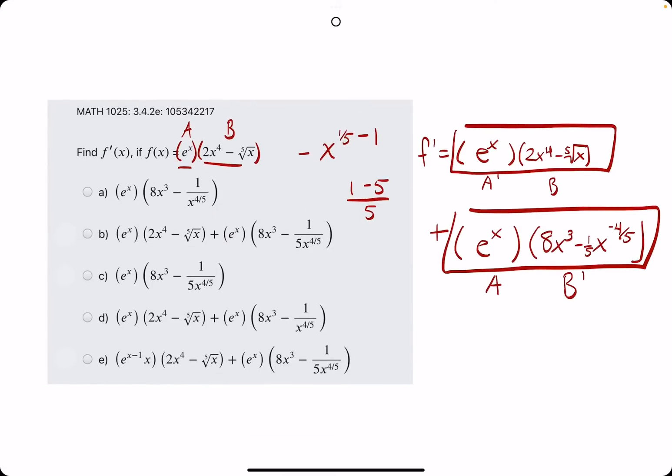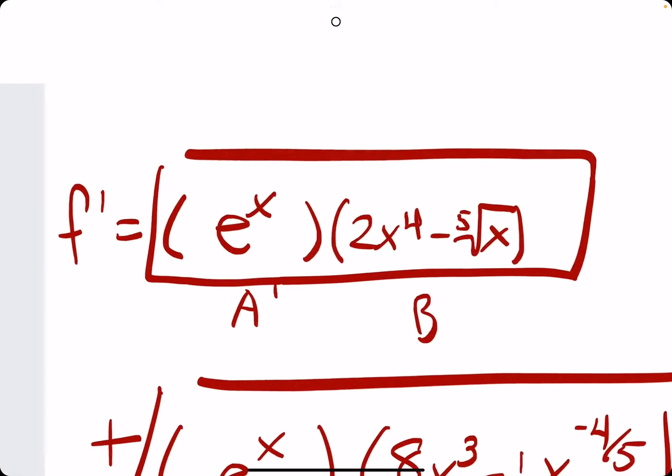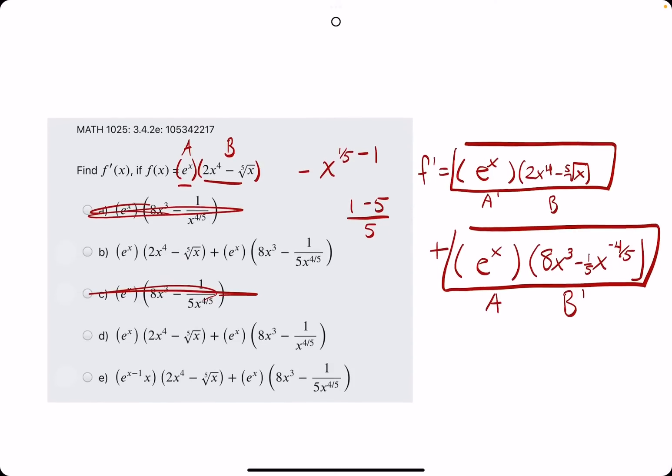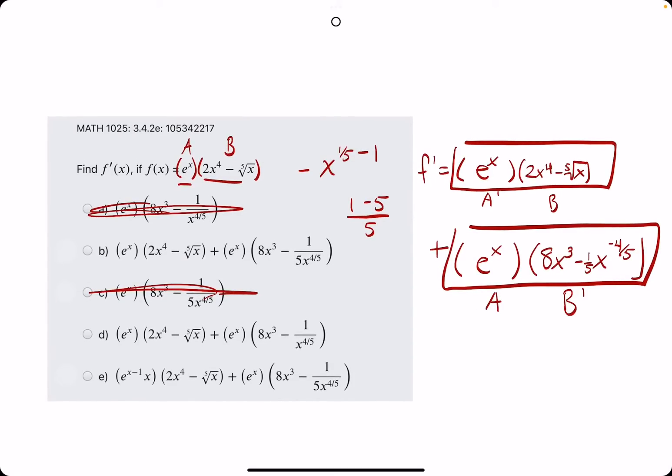So, right off the bat, we can eliminate options A and C because they don't have the correct number of terms. And then, again, we want to see e to the x paired with the original B term. So, I think we see that here, maybe here, not here. Yeah, this x minus 1 in the exponent, that will never be the case. So, we can go ahead and eliminate that option as well.